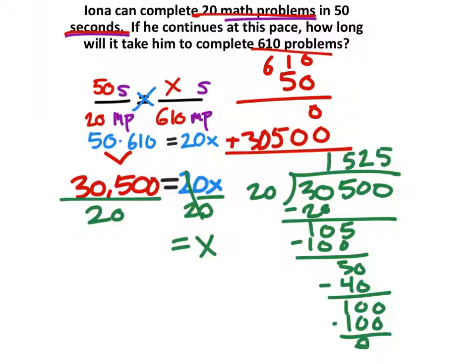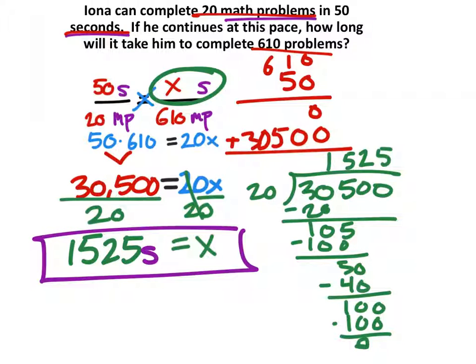And here I've done the math for you without having to make the video so long. So 30,500 divided by 20 would be 1,525. And we do need to label this because it was in seconds. And we just put an S on the end of that, and that would be the final answer.